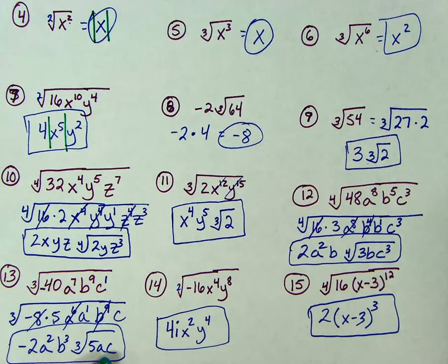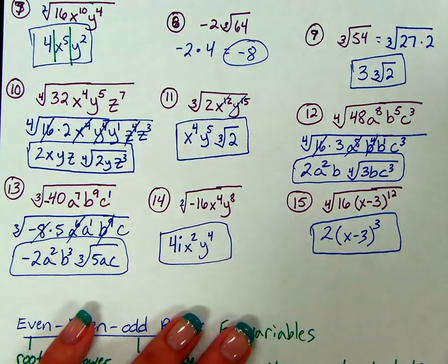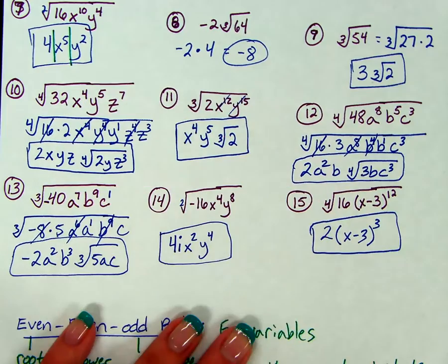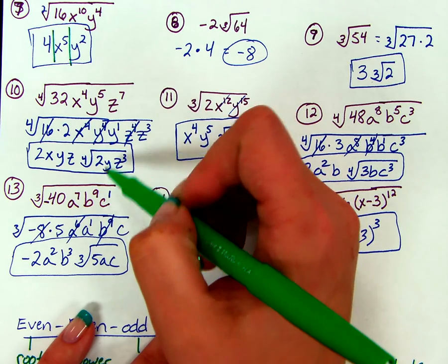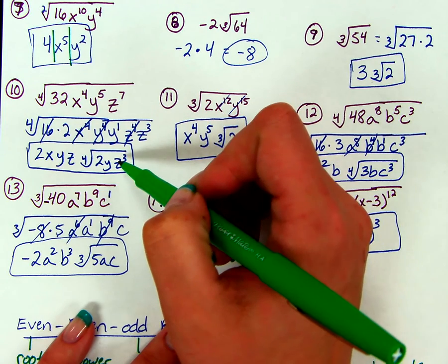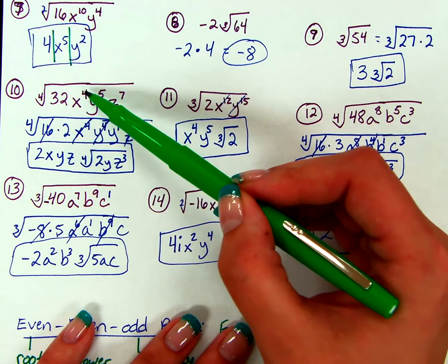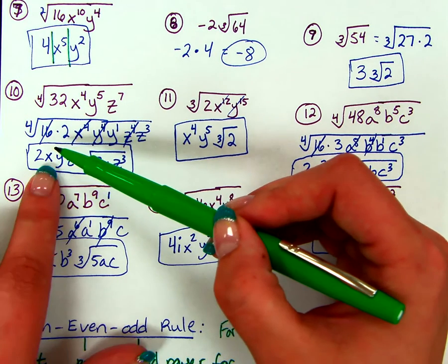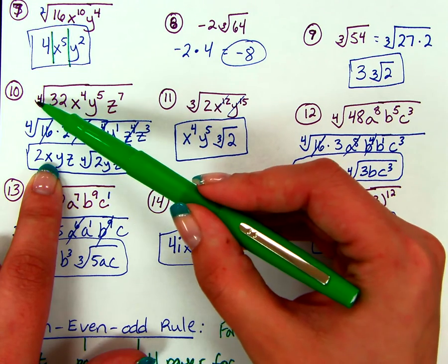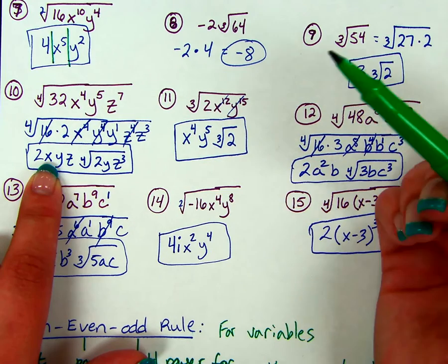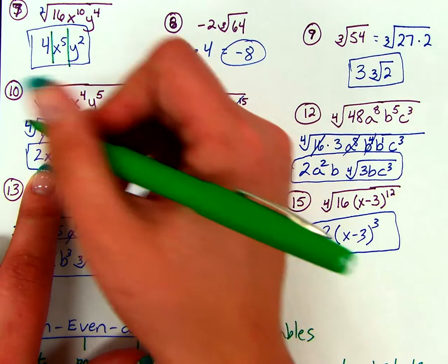Next one, we have a number — don't need to worry about it. Same thing, number 9, we don't need to worry about it. Alright, so example 10, we have some variables and we're starting with an even root, so we're comparing the original to the answer. Here we have even, even, odd — so on x, we're going to need an absolute value symbol. On y, we have even, odd, so the rule doesn't apply. Same with z, we have even, odd, so the rule doesn't apply.